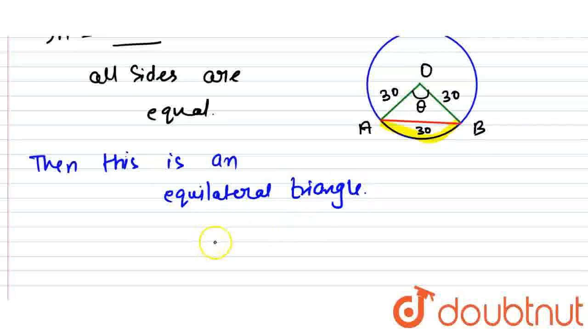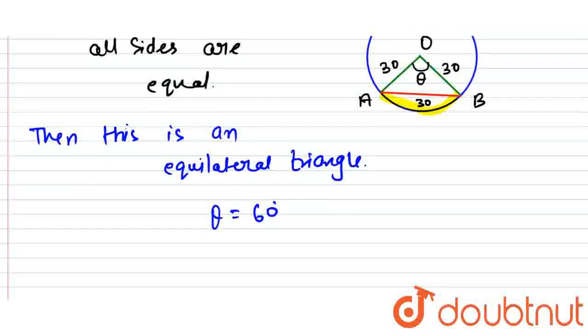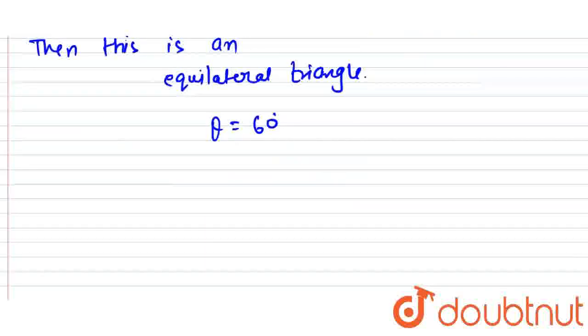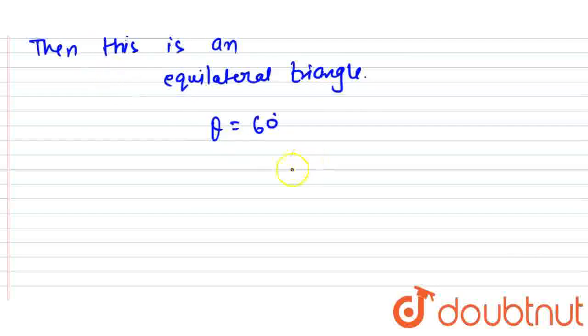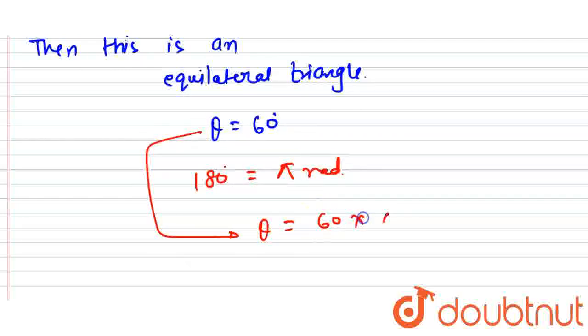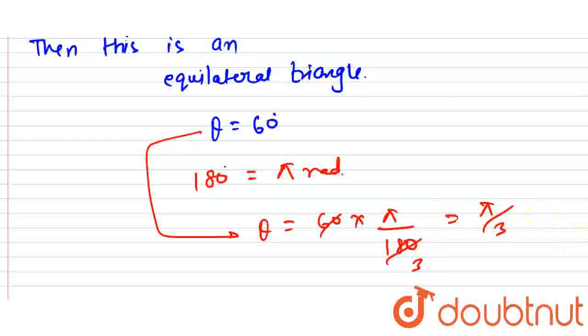So, all angles are 60 degree. Theta is 60 degree. But we have to find the length of arc AB. We use the formula L equals to R theta, and theta is in radian. So, we know that 180 degree is equals to pi radian. So, this is 60 into pi upon 180. This is cancelled out in 3 times. So, this is pi by 3 radian.